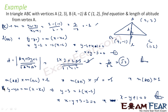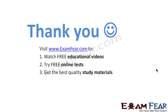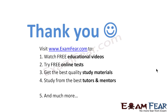To summarize: we found the equation of line BC, used the distance formula to get D = √2, then found the slope of AP as 1 (perpendicular to BC), and derived the equation of line AP as x − y + 1 = 0. Visit examfear.com to watch free educational videos, try free online tests, and get the best quality study materials. Thanks once again.